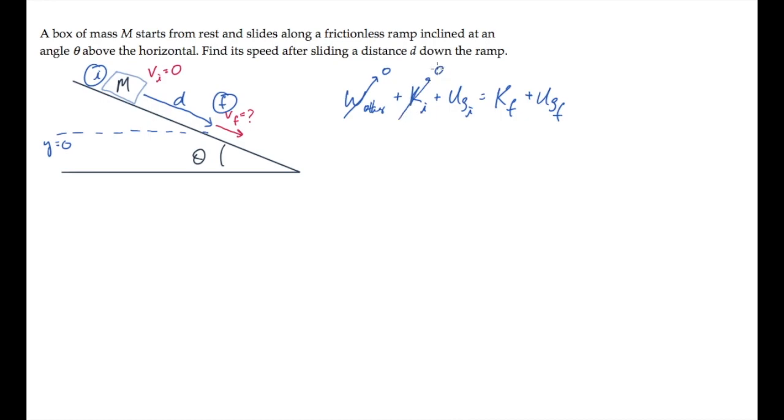Initial kinetic energy is zero because the box starts from rest. The initial gravitational potential energy is mg y sub i. The final kinetic energy is one half mv final squared, and the final gravitational potential energy is zero. The box ends up at the reference level.